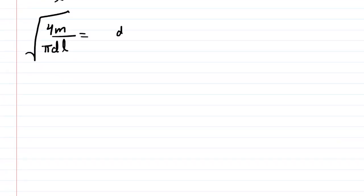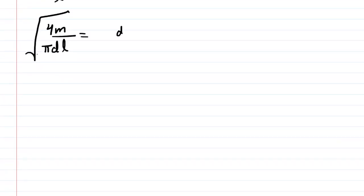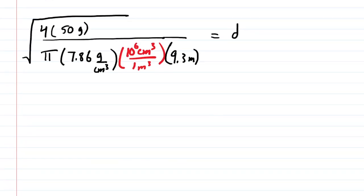And once again, for the density, we're going to end up using a conversion factor. So with everything plugged in, including the length that we calculated in Part A, we end up with a diameter of about 9.3 times 10 to the minus 4 meters. That would be the correct answer in meters.